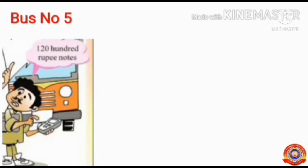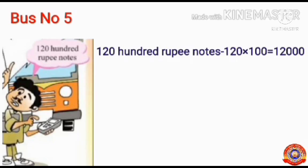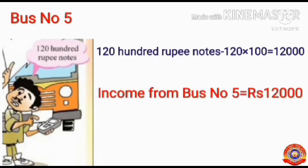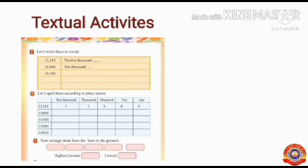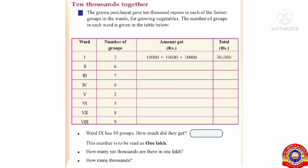Next, let's find out the income from bus number 5. Bus number 5 got 120 one-hundred rupee notes: 120 × 100 = 12,000. So the amount from bus number 5 equals ₹12,000. Children, there are some textual activities for you based on this activity — you should do these in your textbook. See the next activity.